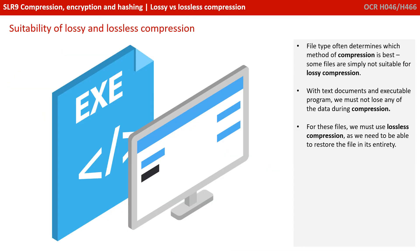File type often determines which method of compression is best, and indeed there are some files which simply are not suitable for lossy compression at all. For example, text documents and executable programmes must not lose any data during the compression process. For these files, we have to use lossless compression, as we need to be able to get back to the original file in its entirety.